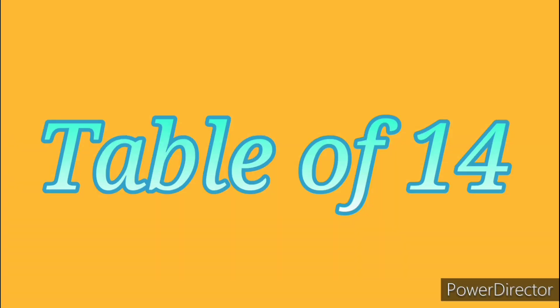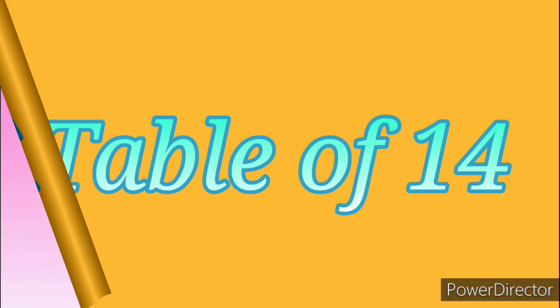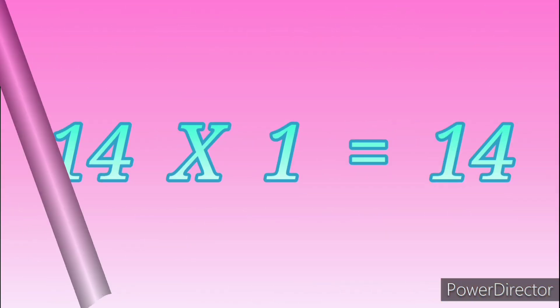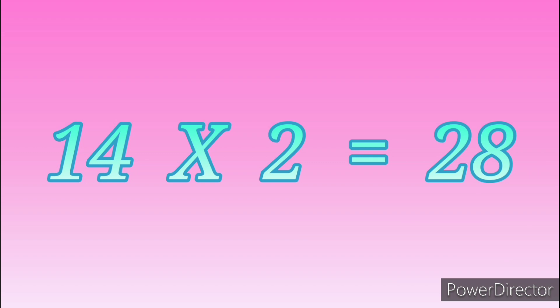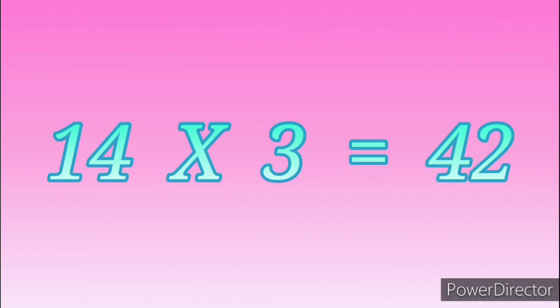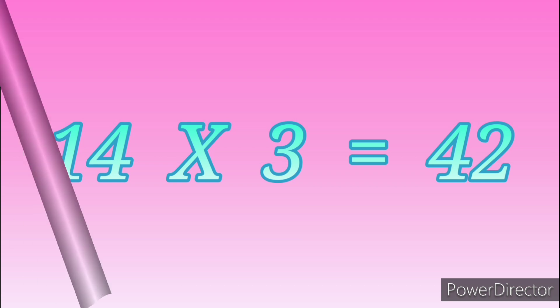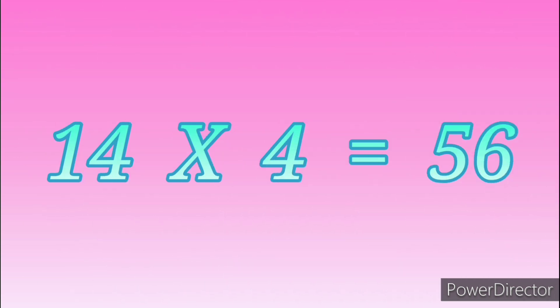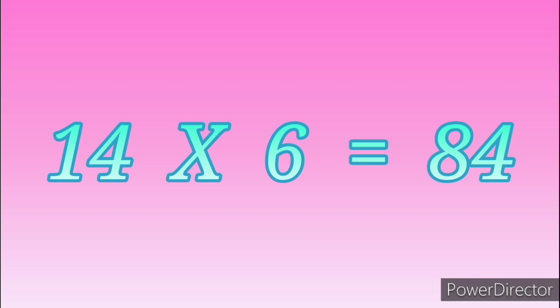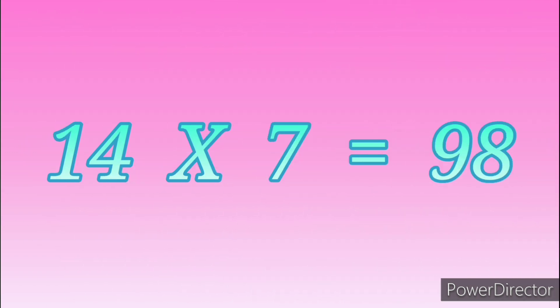Table of Fourteen. 14 ones are 14. 14 twos are 28. 14 threes are 42. 14 fours are 56. 14 fives are 70. 14 sixes are 84. 14 sevens are 98.